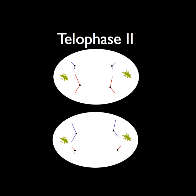Now begins telophase 2. This is telophase as it happens in spermogenesis. The cell begins to split into two sperm cells. Neonucleases also form around the chromosomes.